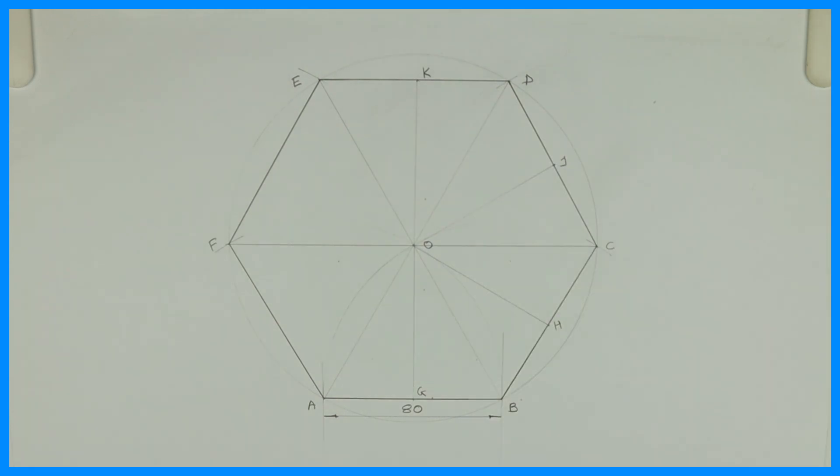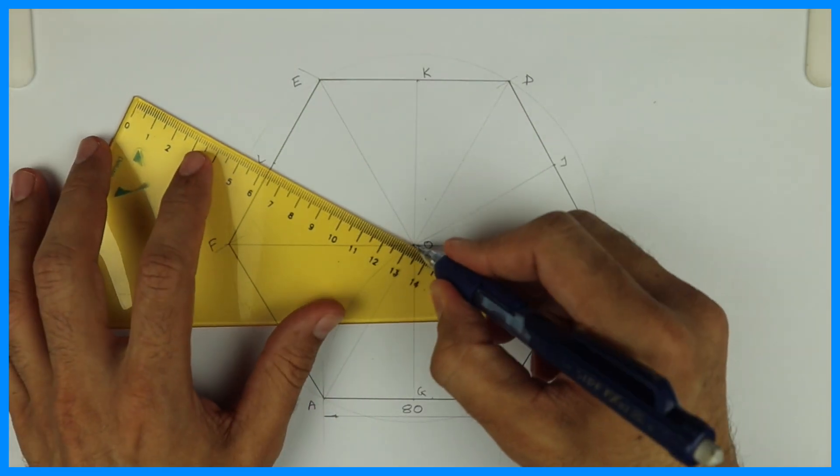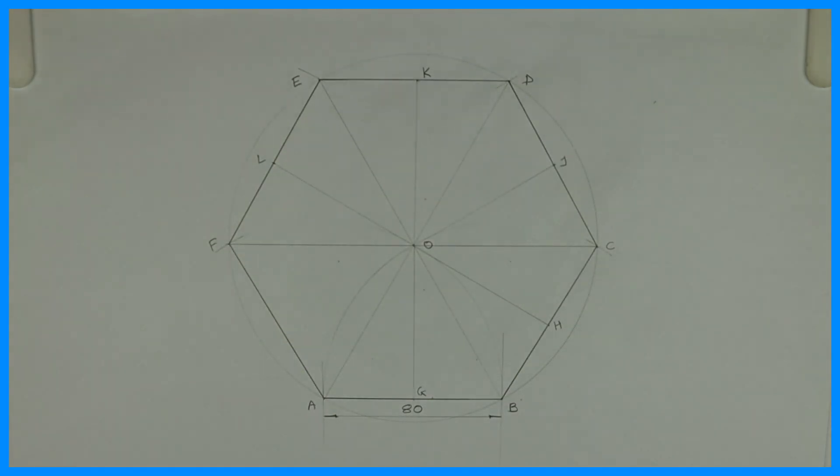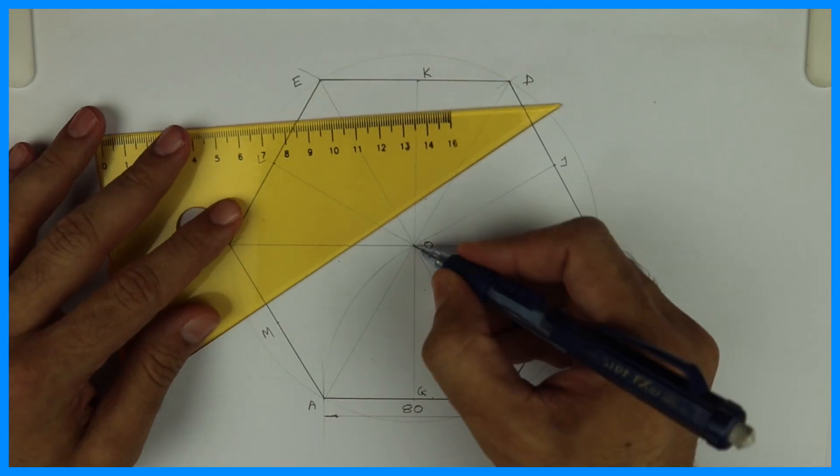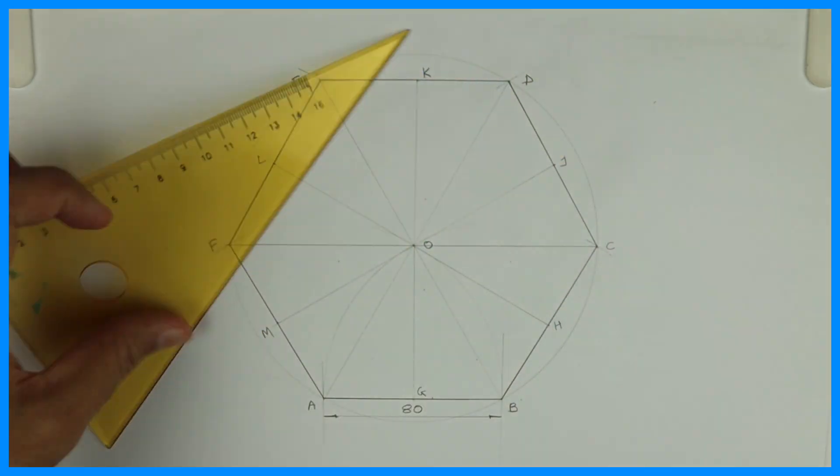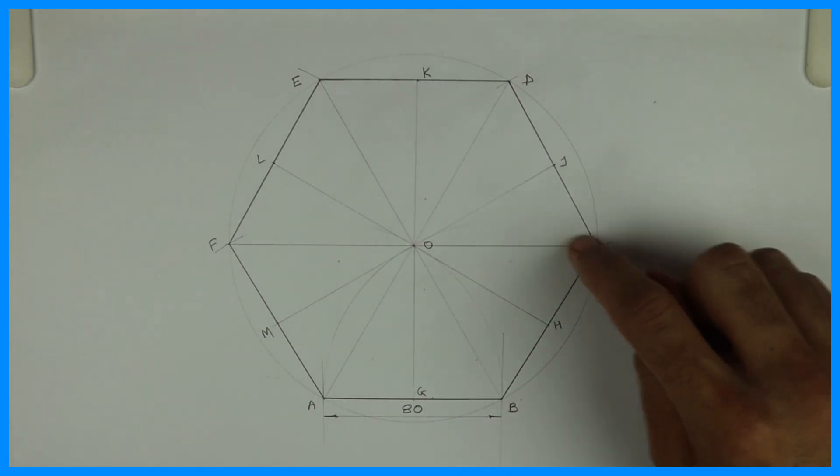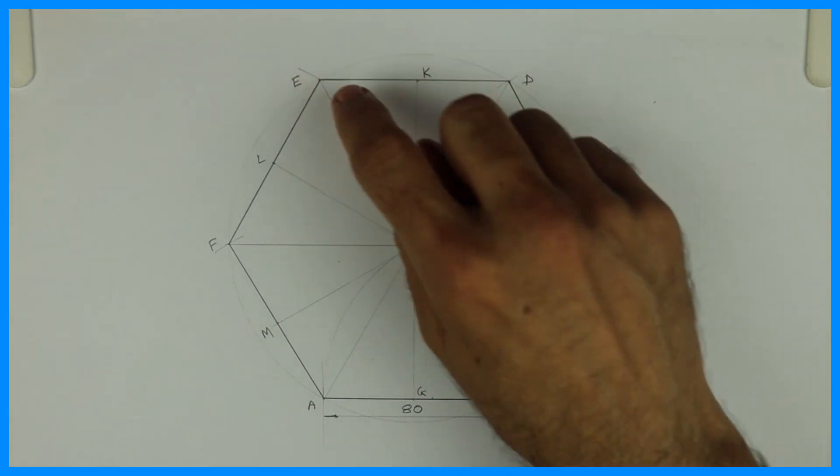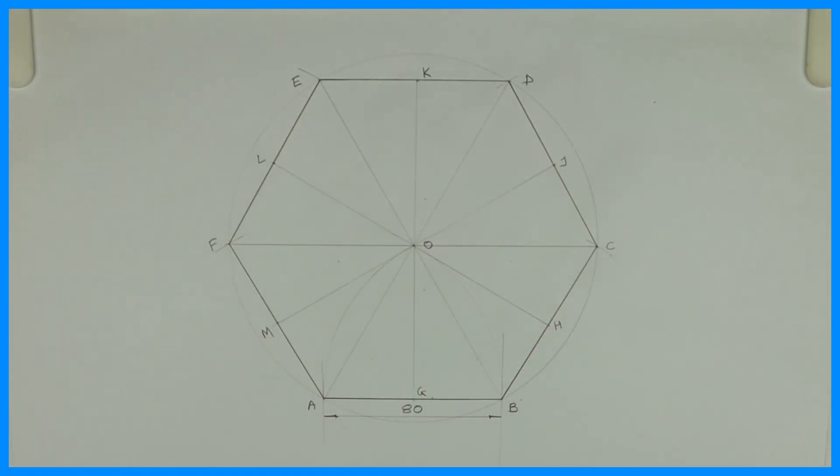This is K. This is L. Join O to L. This is M. Join O to M. Now see this: OAB, OBC, OCD, ODE, OEF, OFA. Six triangles we got.